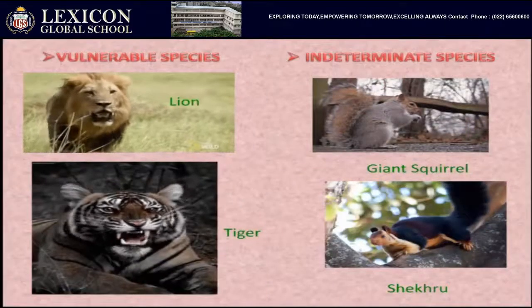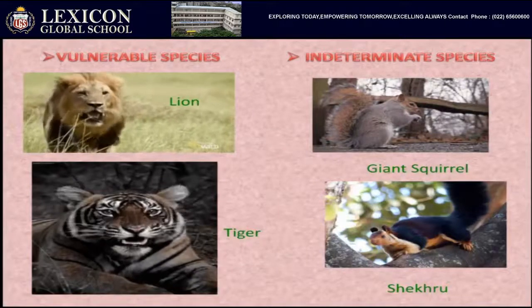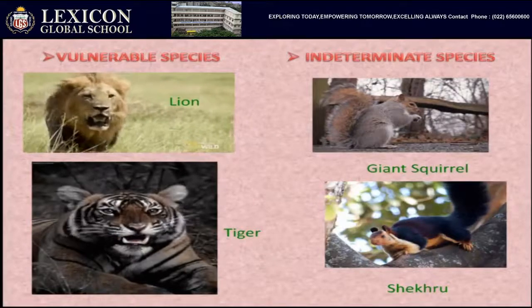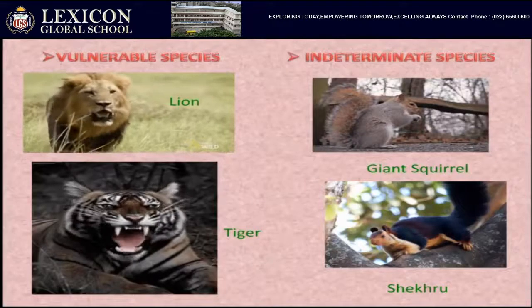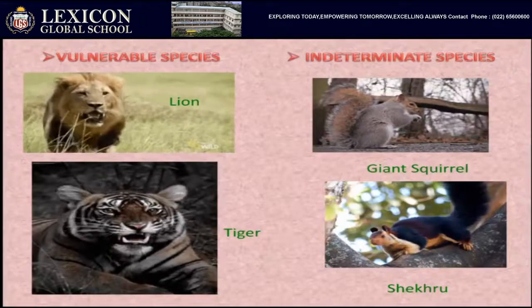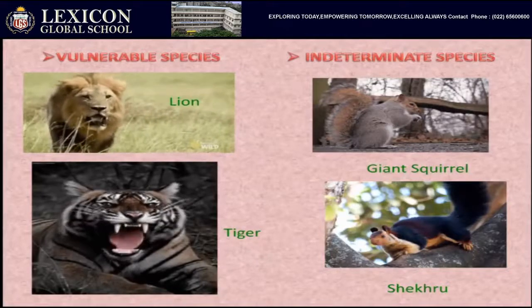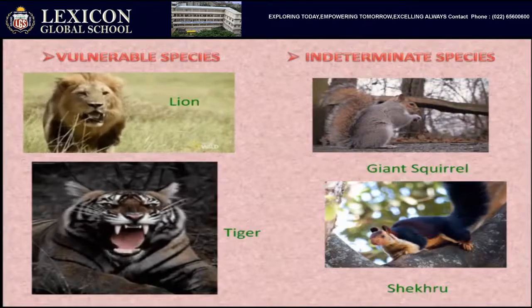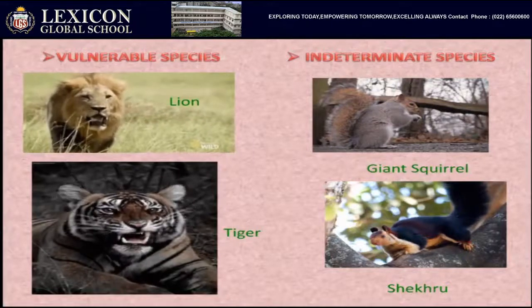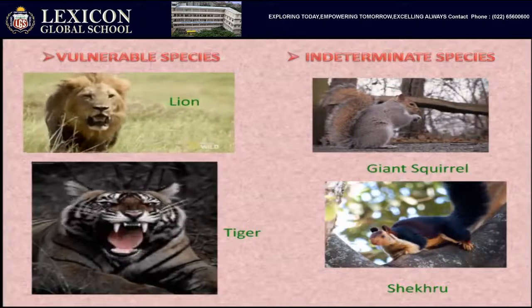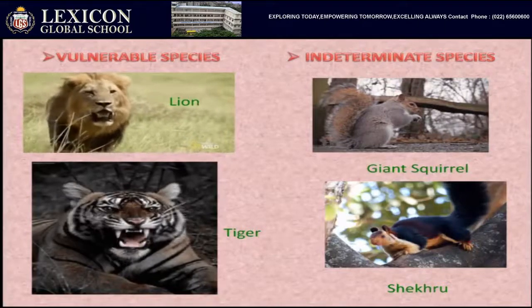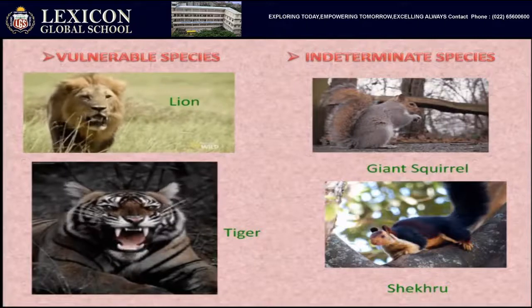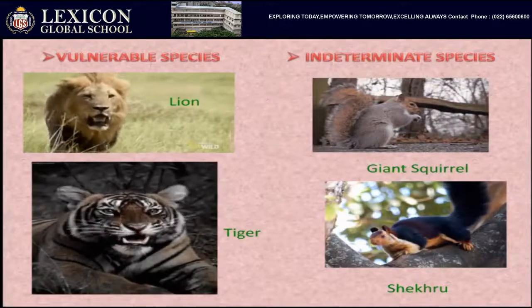Next are vulnerable species — extremely few organisms with a continuously declining number, posing a threat. Examples are lions and tigers. We also have the 'Save the Lion, Save the Tiger' movement, as the number of tigers is declining every day. Then there are indeterminate species — organisms appear to be endangered but data is not enough due to their atypical habits.